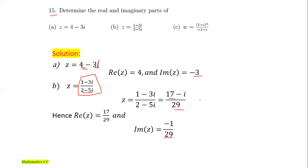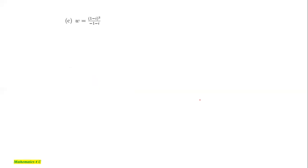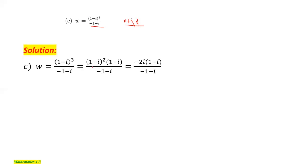The next question is question number 3: complex number w, given as (1 minus i) to the power of 3, over (minus 1 minus i). As usual, we have to change this into the form x plus iy. To simplify, we note that (1 minus i) squared equals minus 2i, so the numerator becomes minus 2i times (1 minus i), over (minus 1 minus i), which simplifies to 4 over 2.